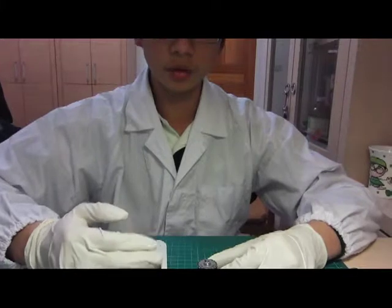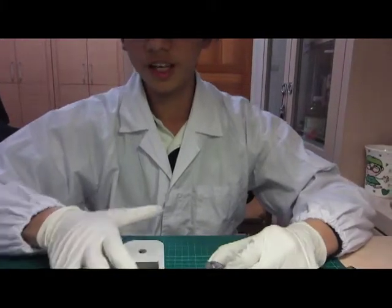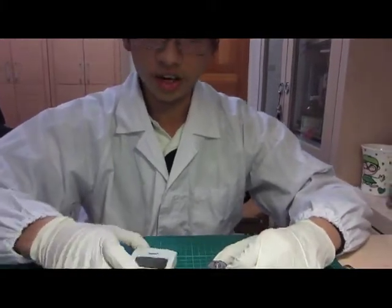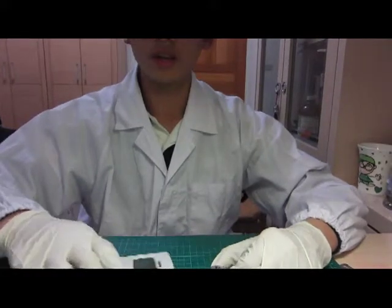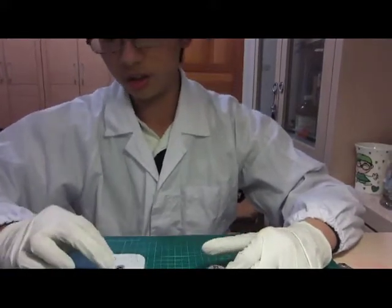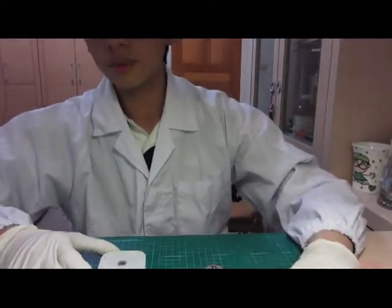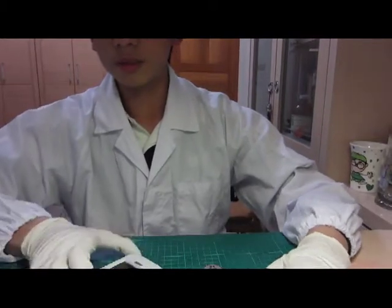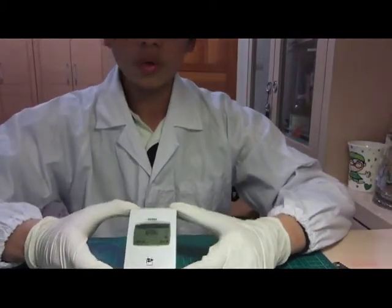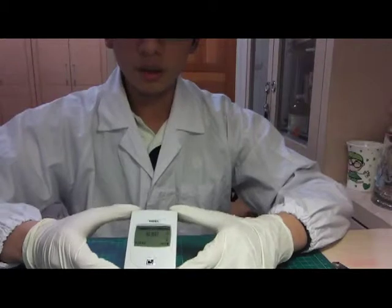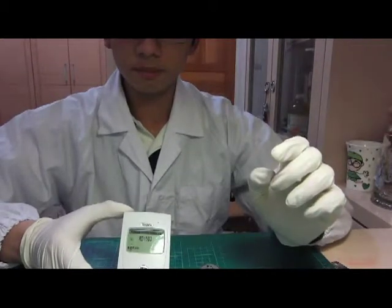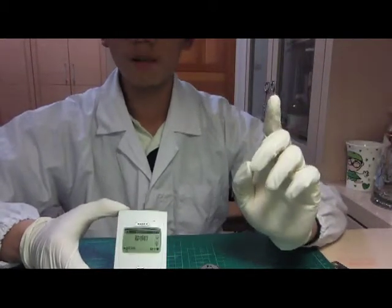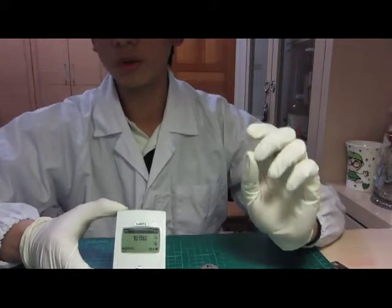Here is a radium-226 radiation source, and here is a Geiger counter. Now, let me turn it on. You can hear it is beeping. One beep means it detects one radiation event. It will calculate the frequency of the beeps and display it with the unit microsievert per hour.